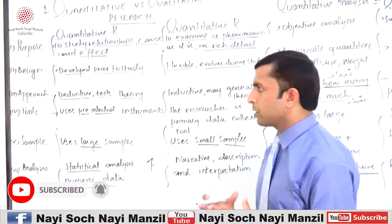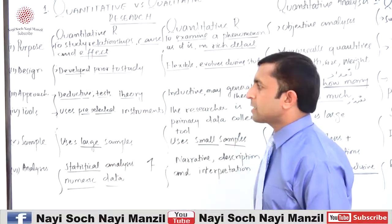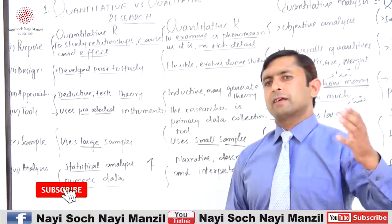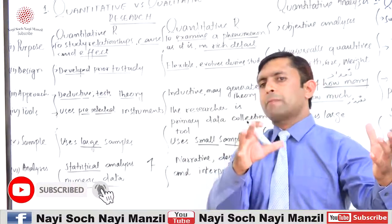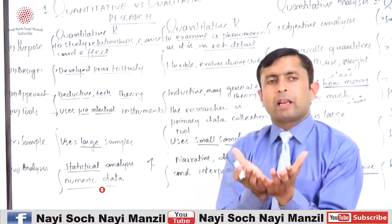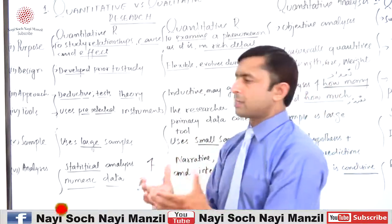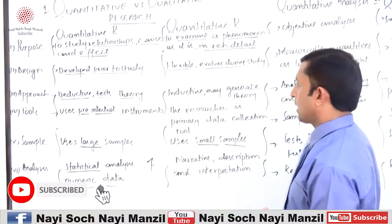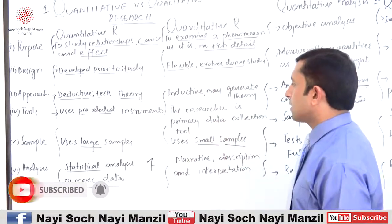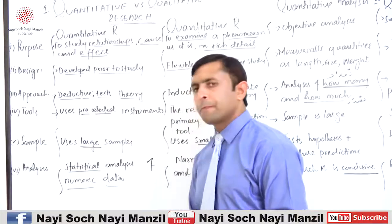According to sample, quantitative research uses a large amount of samples from the population. First it selects a population, then formulates a sample at a large scale. If we talk about qualitative research, it chooses small samples.